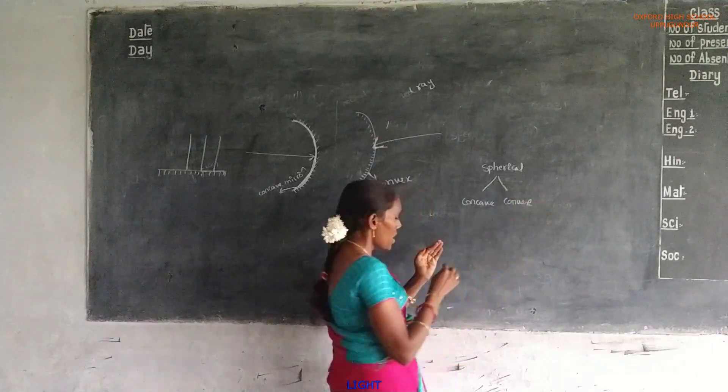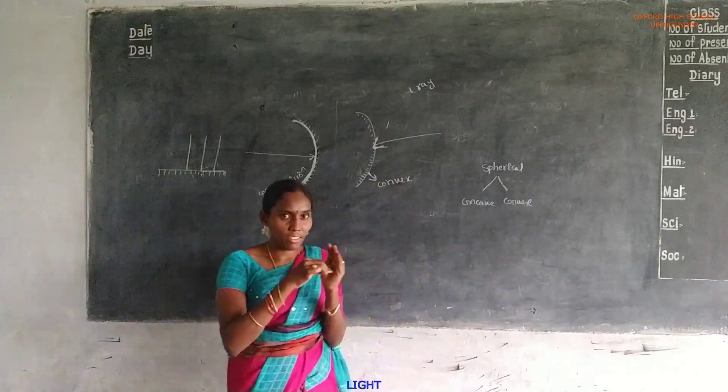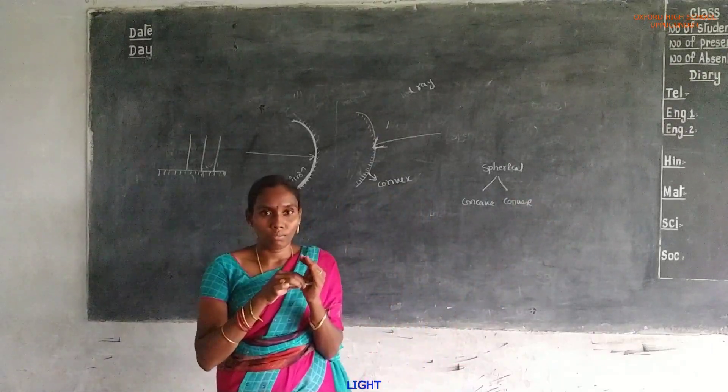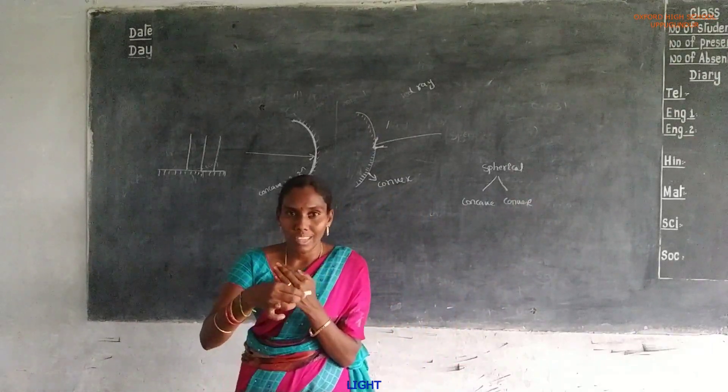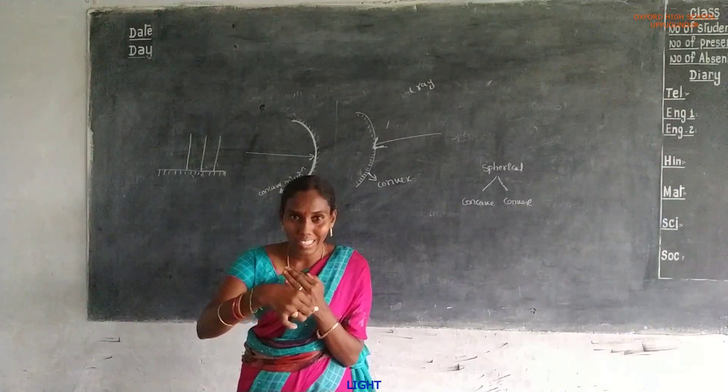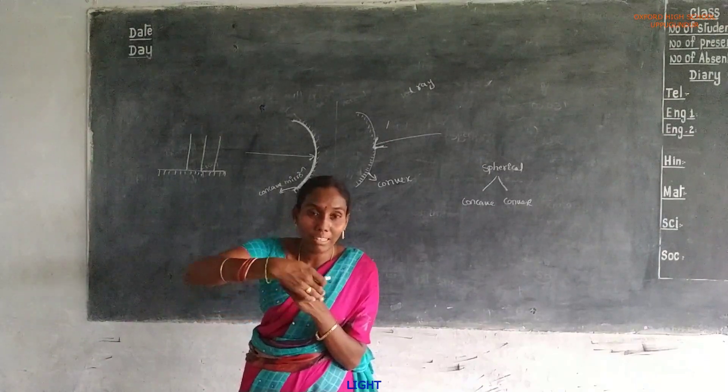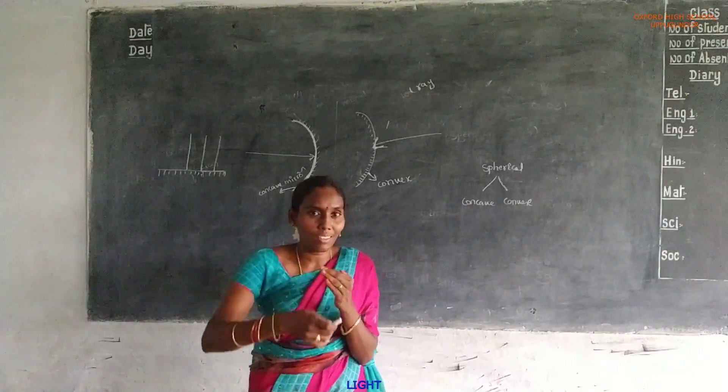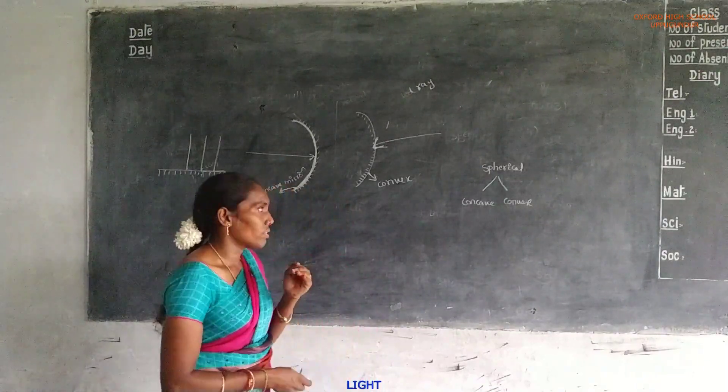Hollow surface means concave. Bulged outer surface means convex.